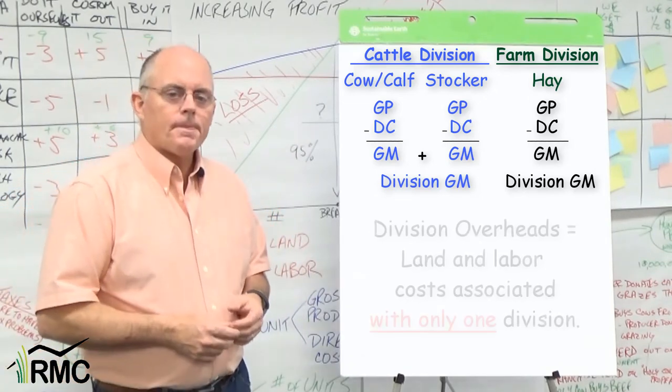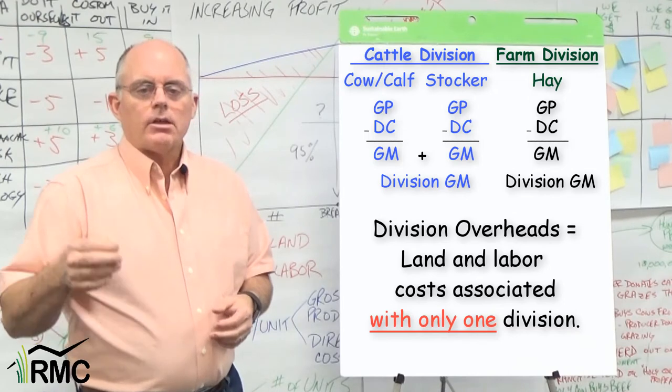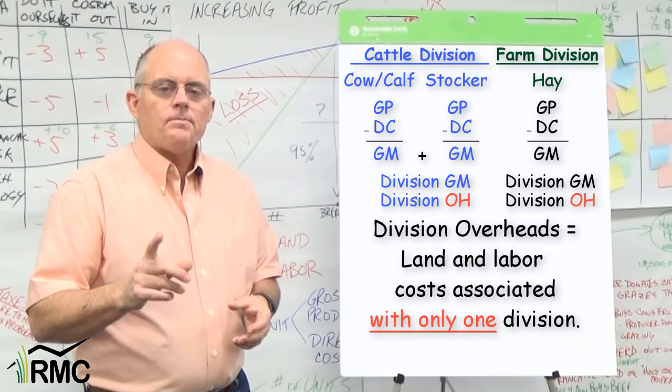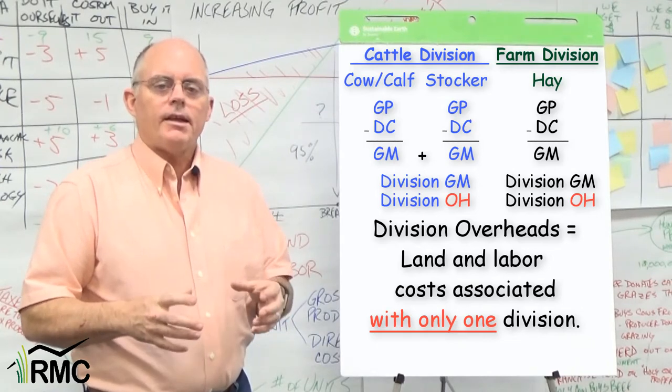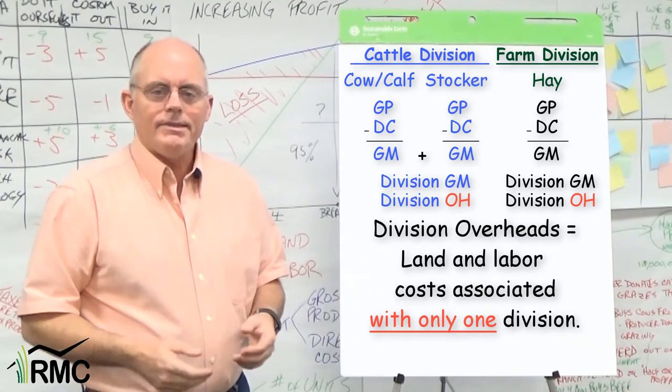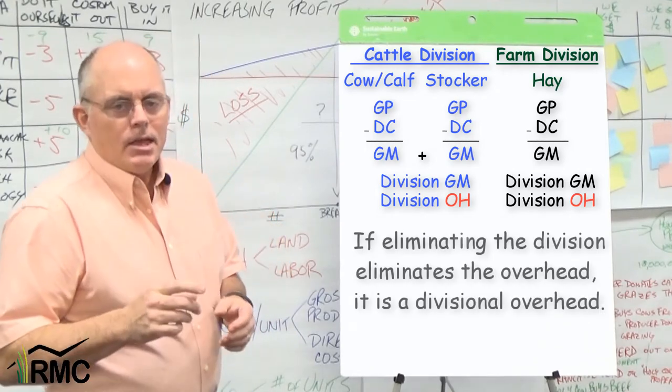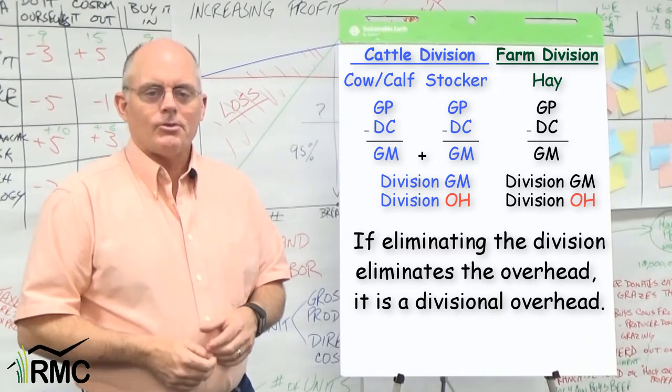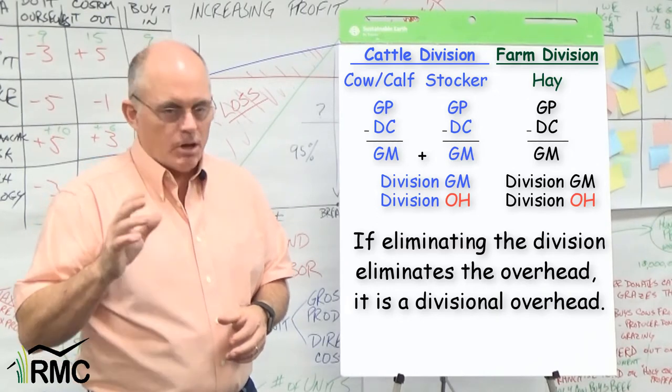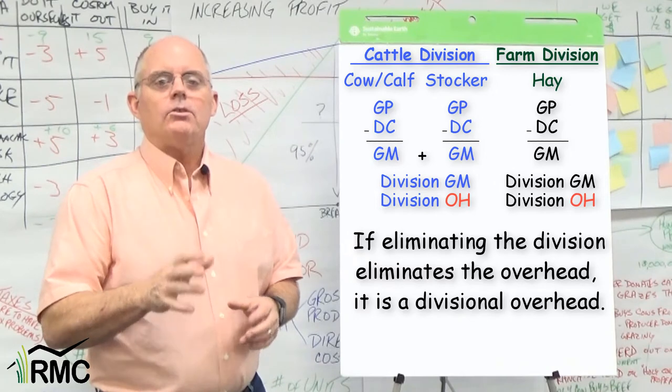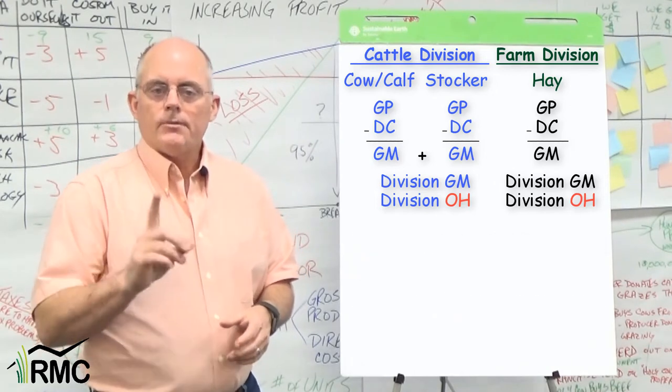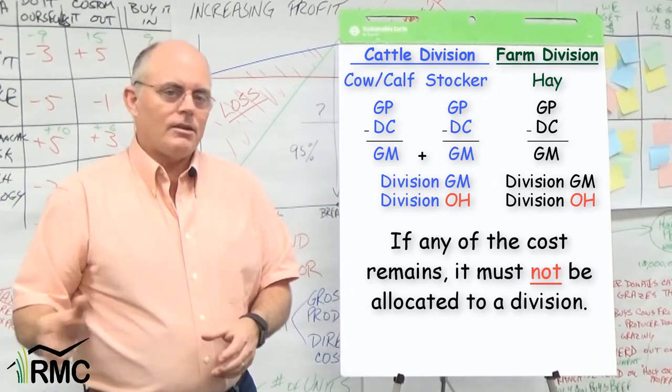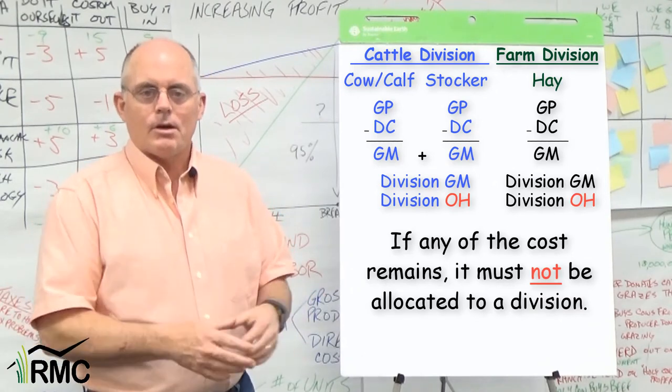Now what about overheads? Any overheads that are unique to a division should be allocated to that division. In other words, if 100% of the overhead can be allocated, go ahead and allocate it. Here's the test: If you stop doing the division, would you lose 100% of the cost? If the answer is yes, if you'd lose 100% of the cost, then you can allocate the overhead to that division. But if the answer is no, if you'd still have at least some of that cost, you cannot allocate that overhead or any part of it to a division.